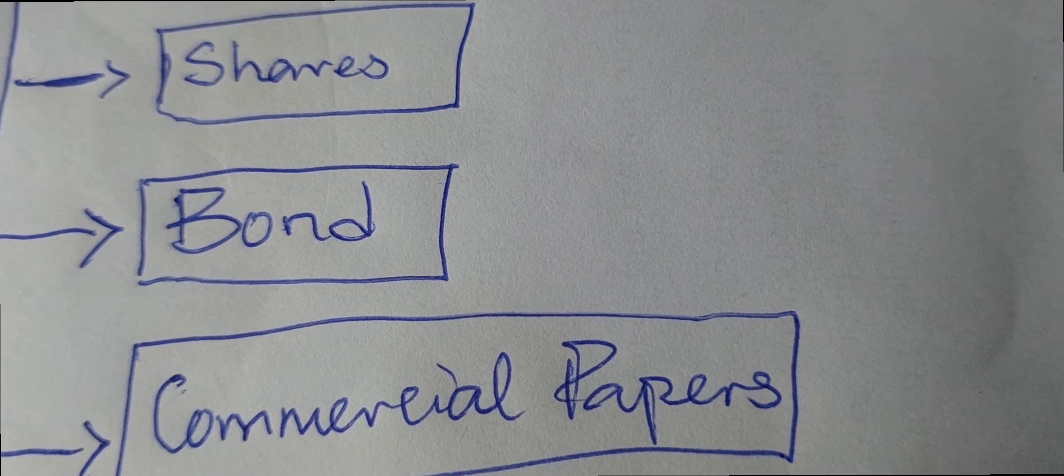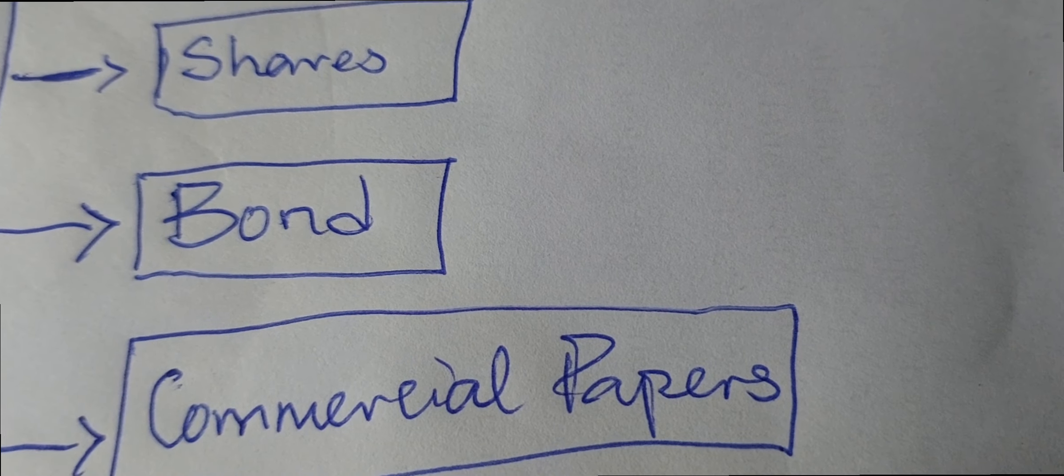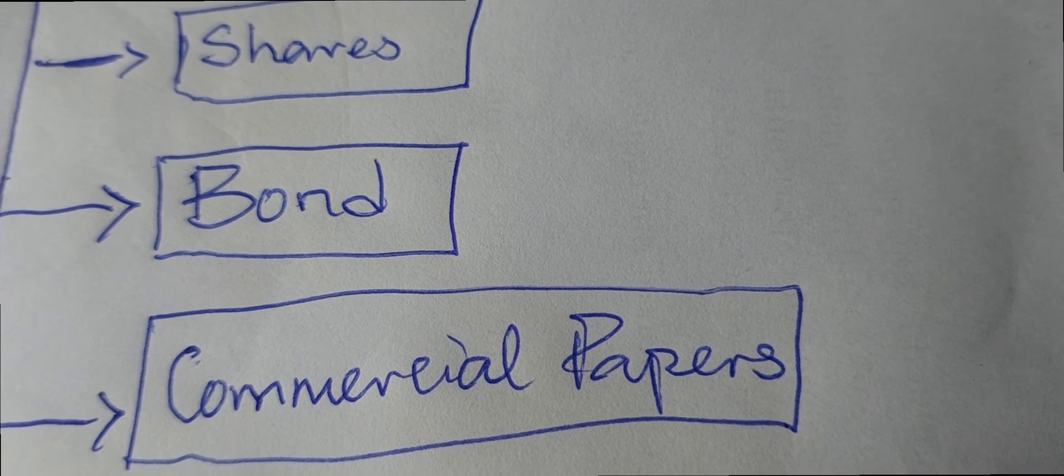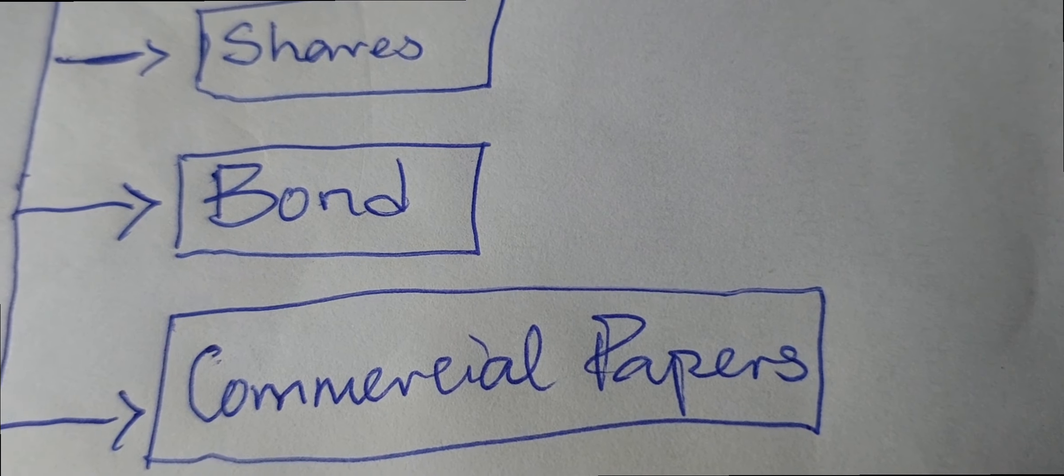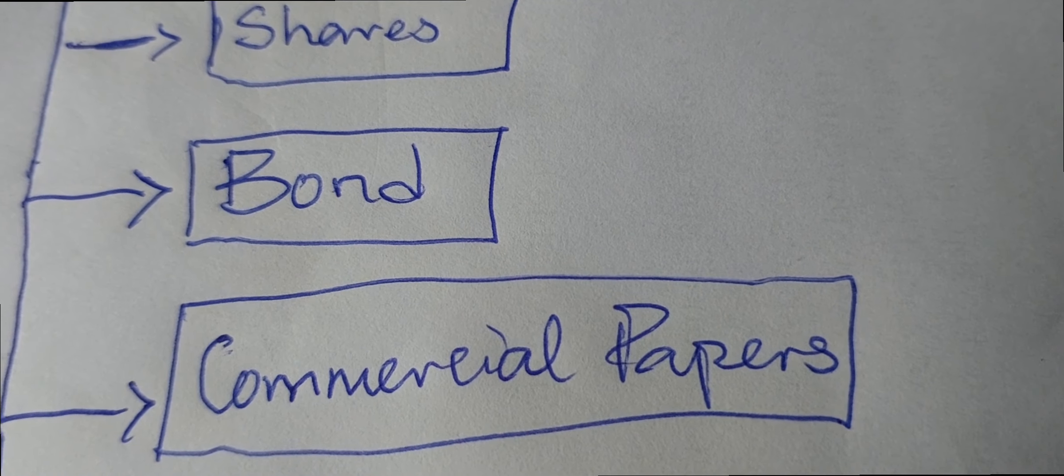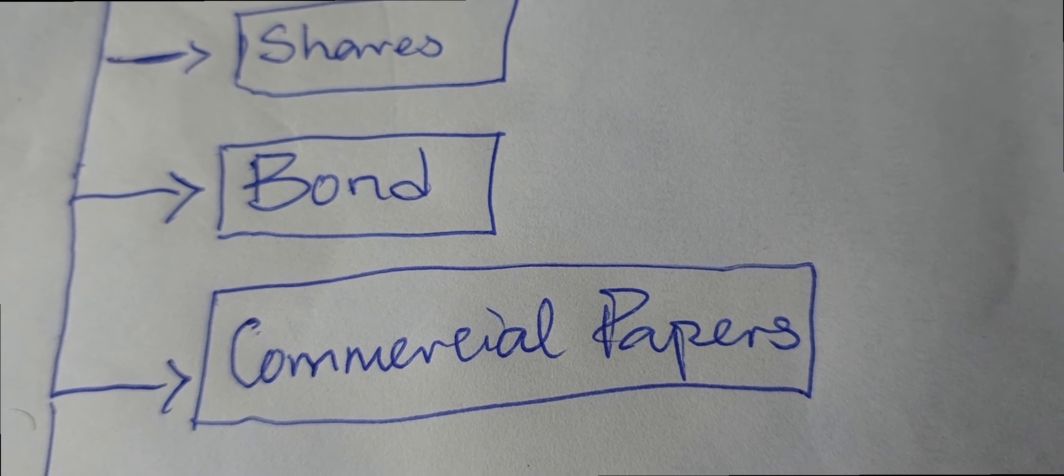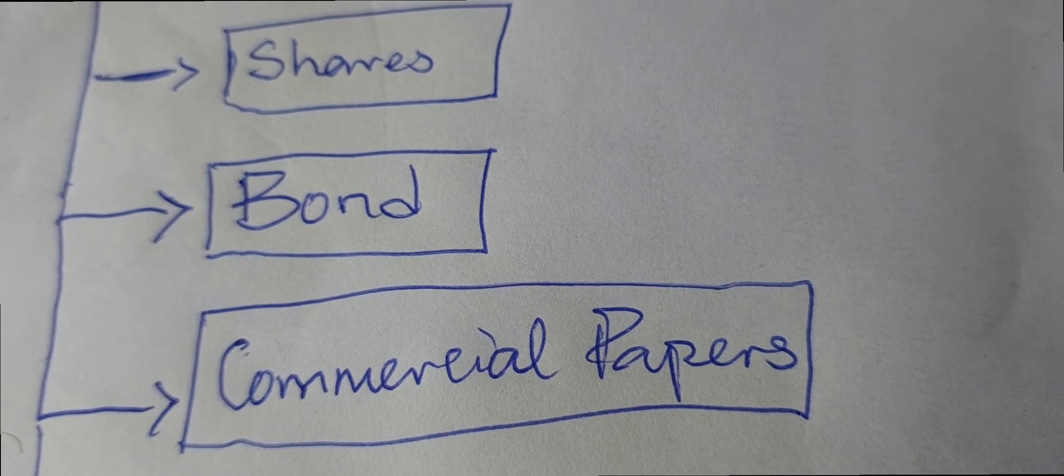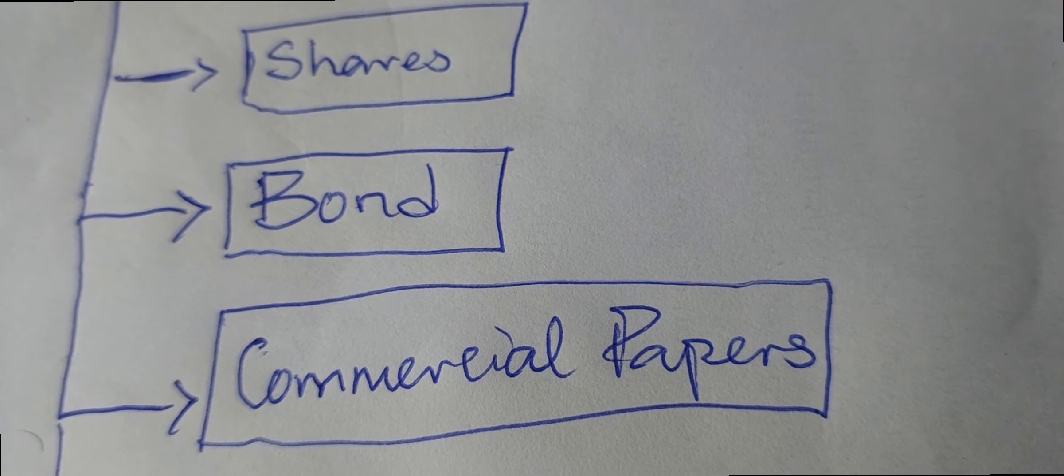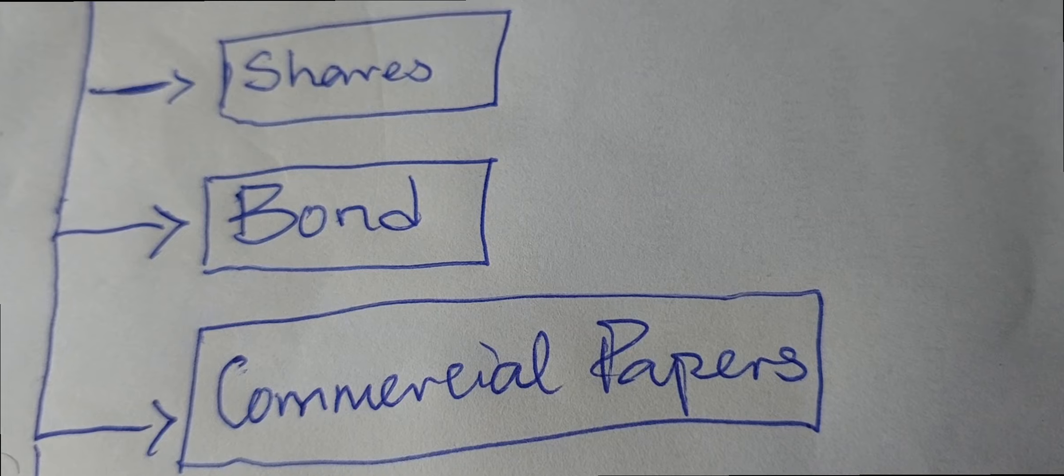Then you have commercial papers. Commercial papers are just like bond, but this time around bond is issued by government. Commercial papers are issued by company in order for them to also raise funds and they also have shorter days. It can be 180 days, it can be 90 days.